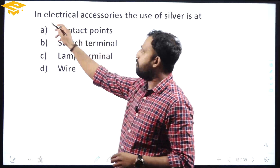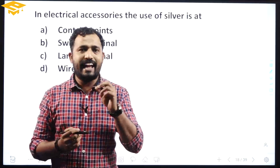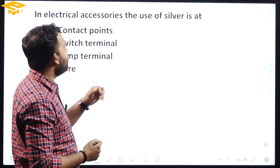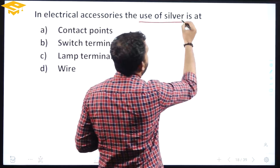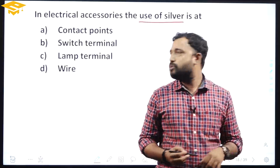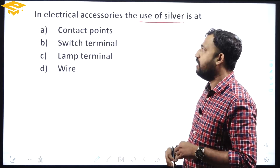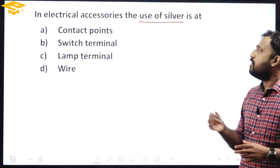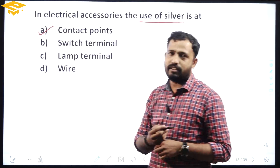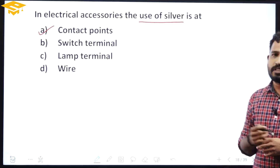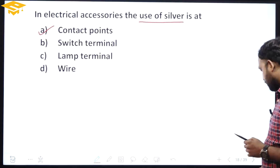This is about wiring and electrical accessories. The use of silver — how do we use it? Options: contact points, switch terminal, lamp terminal, or wire. Silver is most commonly used in contact points.